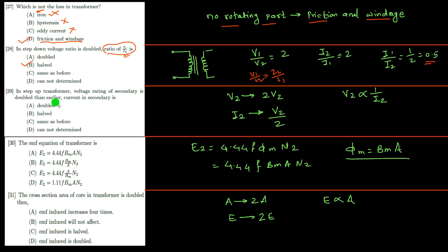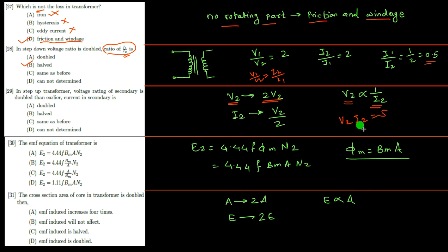In a step-up transformer, the voltage rating of the secondary is doubled. Since voltage and current have an inverse relationship in a transformer — it does not follow Ohm's law — V₂ is inversely proportional to I₂. So if V₂ is doubled, I₂ will be half, because V₂ × I₂ = S (apparent power) must be maintained. Therefore I₂ is half.